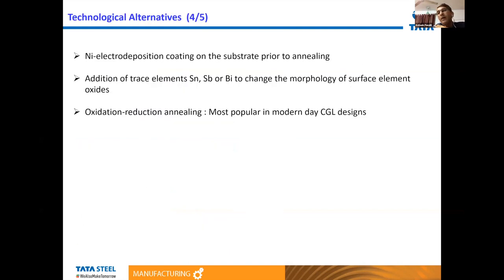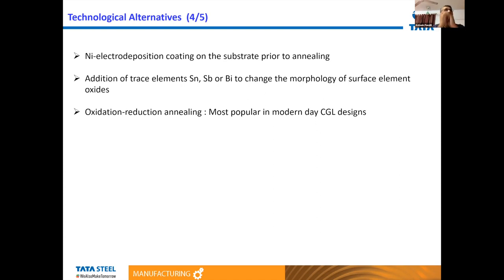To prevent surface oxide formation, one technology is nickel electro-deposition coating on the substrate prior to annealing — the nickel flash coat prevents diffusion of aluminium, silicon, or manganese to the surface. This is an old and not very popular technology. There are also papers on addition of trace elements like tin, antimony, and bismuth to alter the morphology of surface oxides, making them more favorable for good wettability.